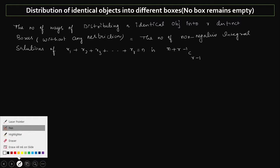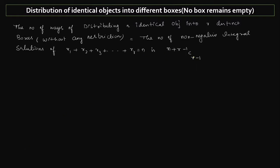If you did not watch that, go to that video and watch it first before watching this. Here, r is the number of boxes, and n is the number of objects — the right-hand side number you see in the equation represents how many identical objects are given to you, and r represents the number of boxes.